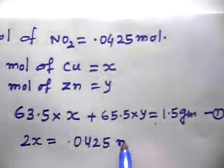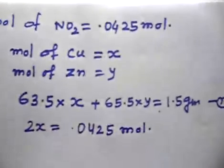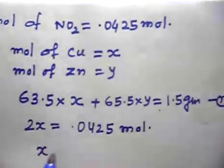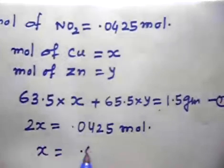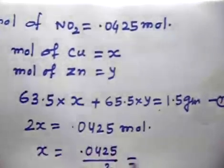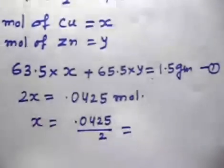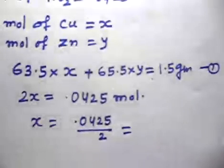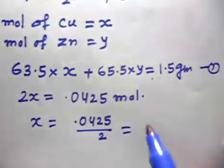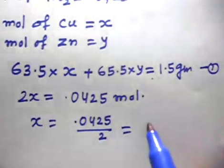Setting 2X = 0.0425 and solving: X = 0.0425 / 2 = 0.02125 moles. This is the moles of copper.